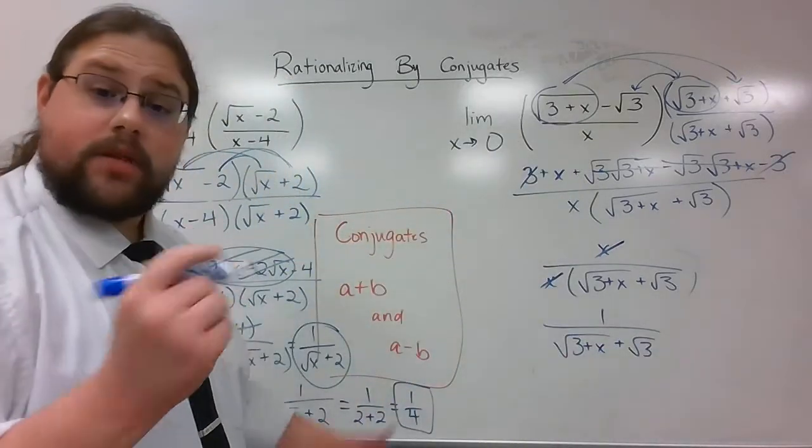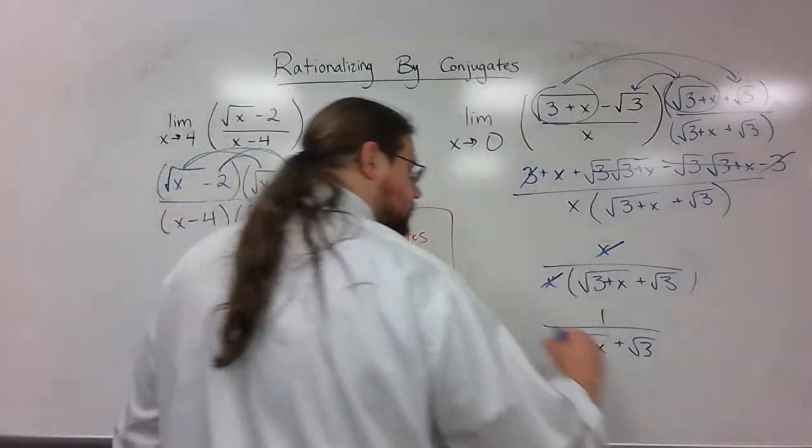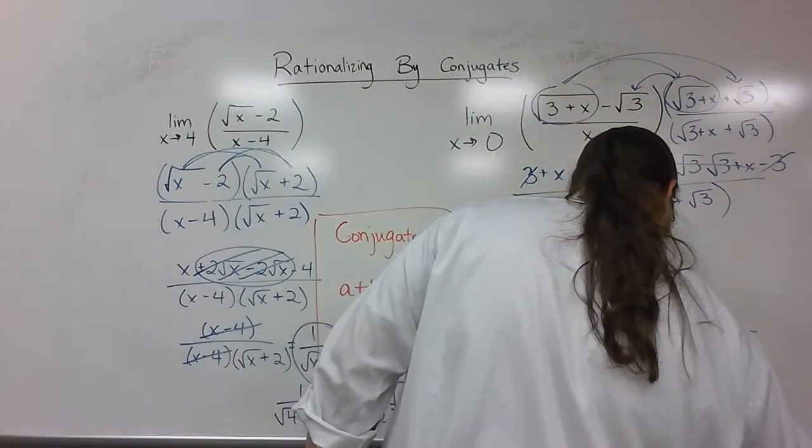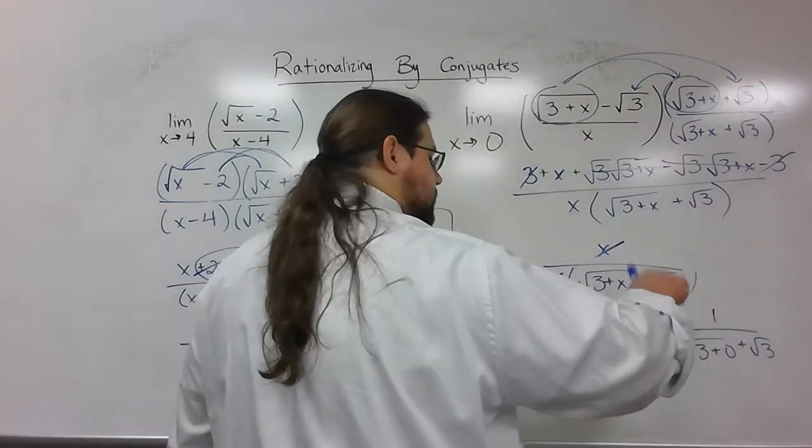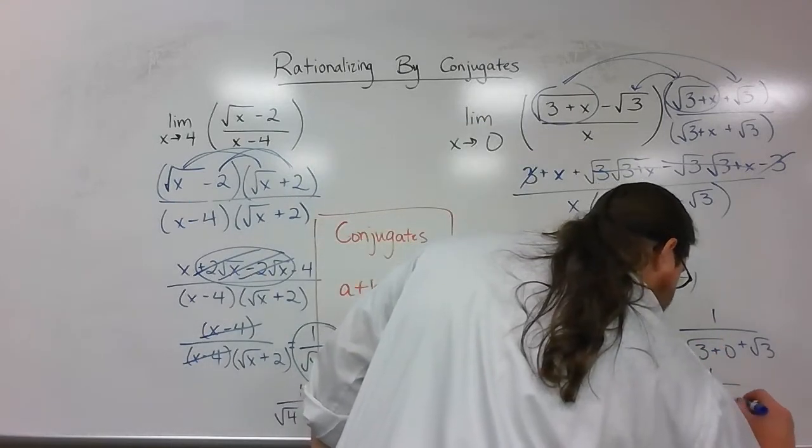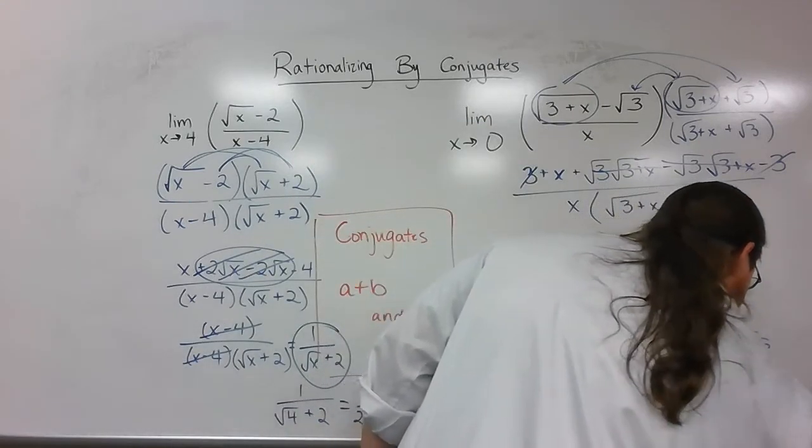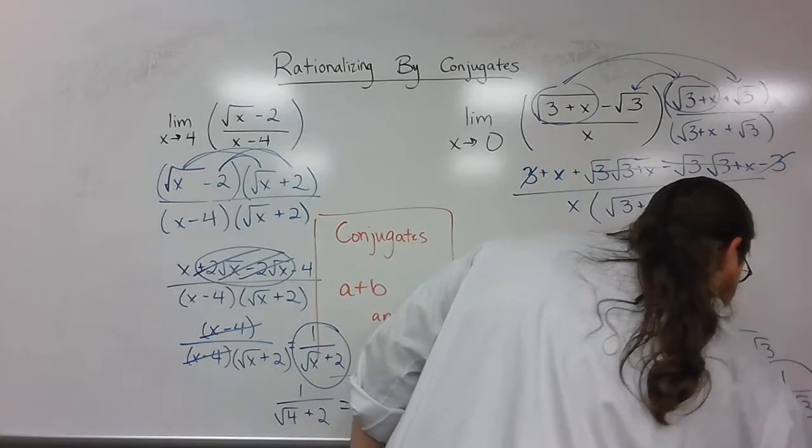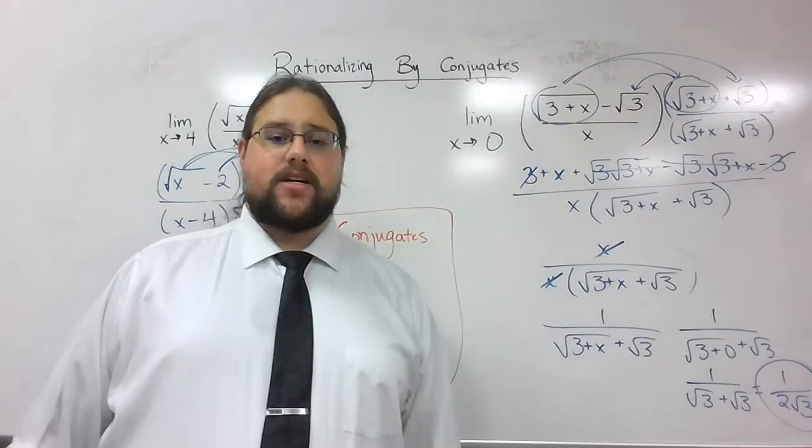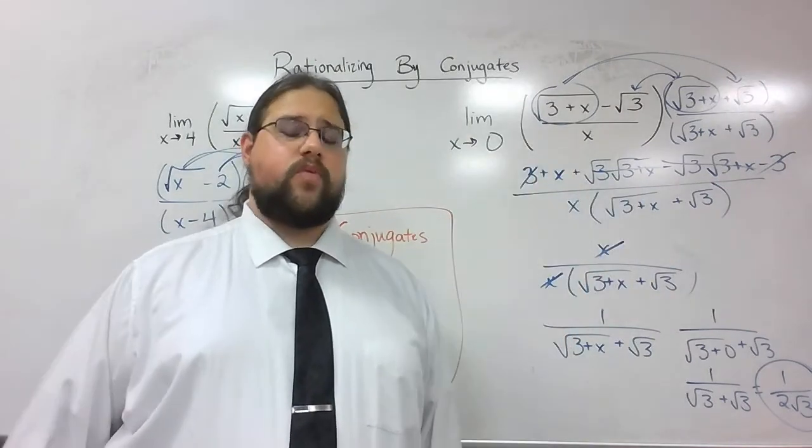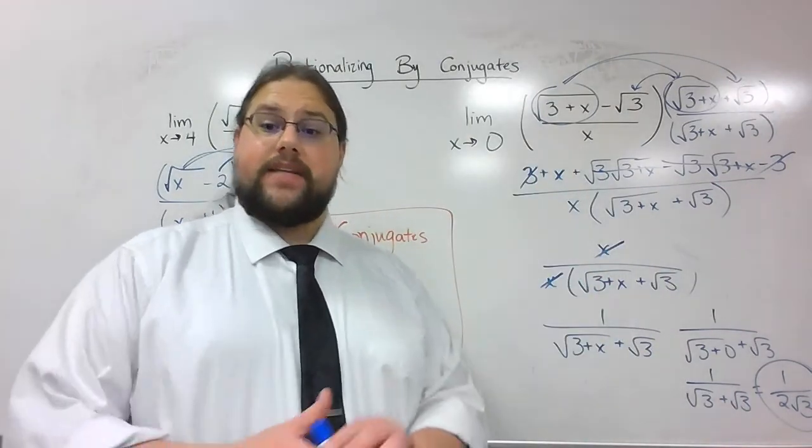Now, I can plug in 0. Let's see what happens. So, 1 over the square root of 3 plus 0 plus the square root of 3. Well, that's going to be the square root of 3 plus the square root of 3, which hopefully you guys remember is 2 square roots of 3, and that's the bottom. So, 1 over 2 square roots of 3 is my final answer. Hopefully, that helps illuminate this for you, and hopefully you guys will start looking for conjugates.